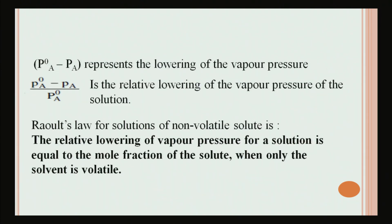P°_A − P_A represents the lowering of vapor pressure, and (P°_A − P_A) / P°_A is the relative lowering of vapor pressure of the solution. Raoult's law for a solution containing a non-volatile solute states that the relative lowering of vapor pressure for a solution is equal to the mole fraction of the solute, when only the solvent is volatile.